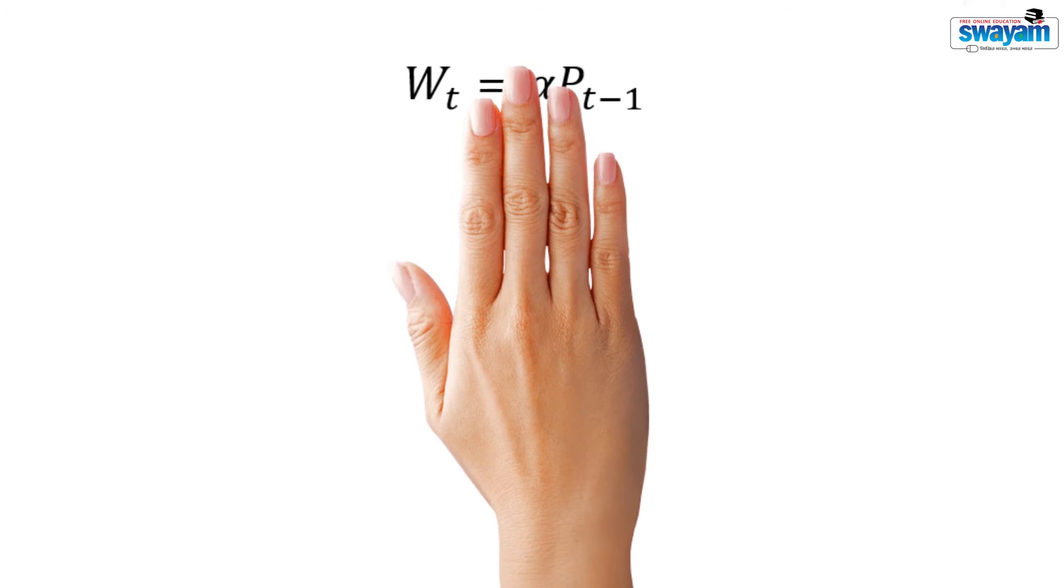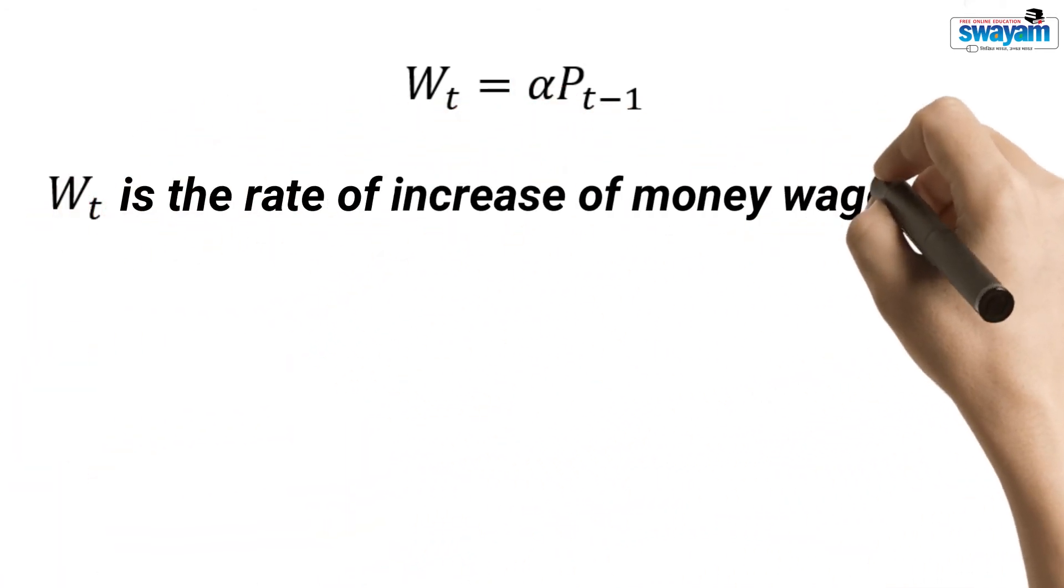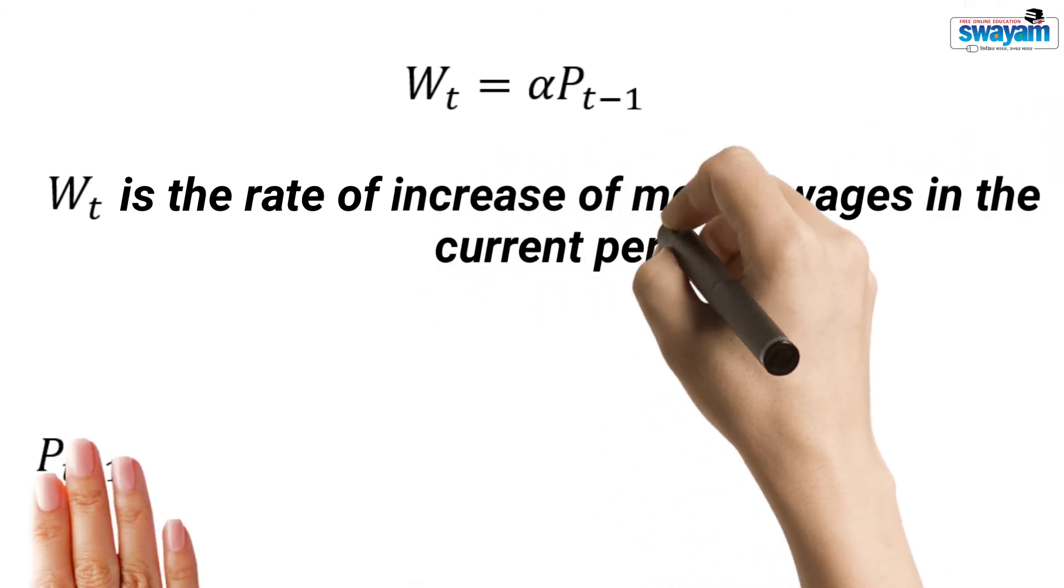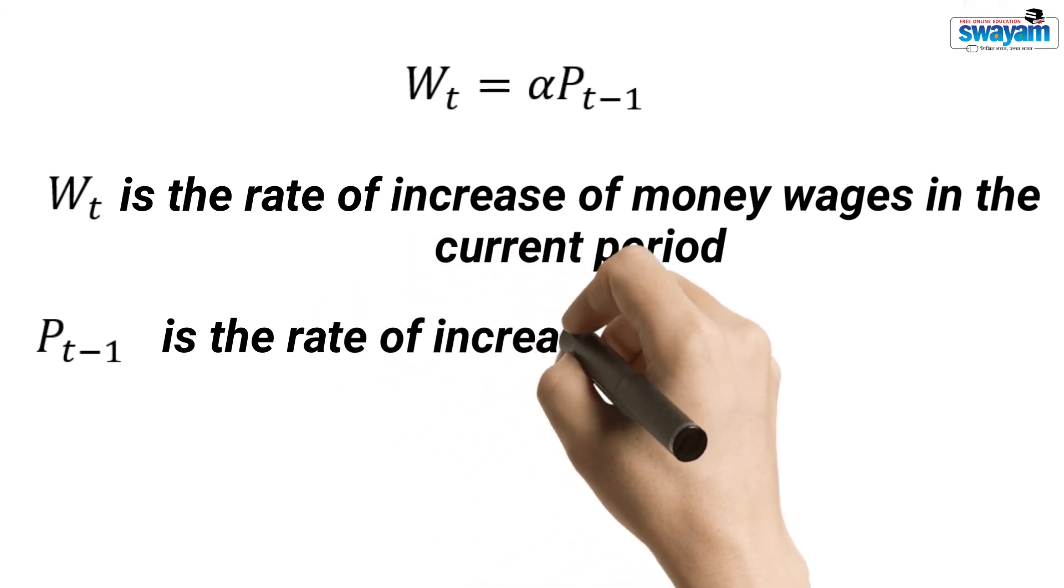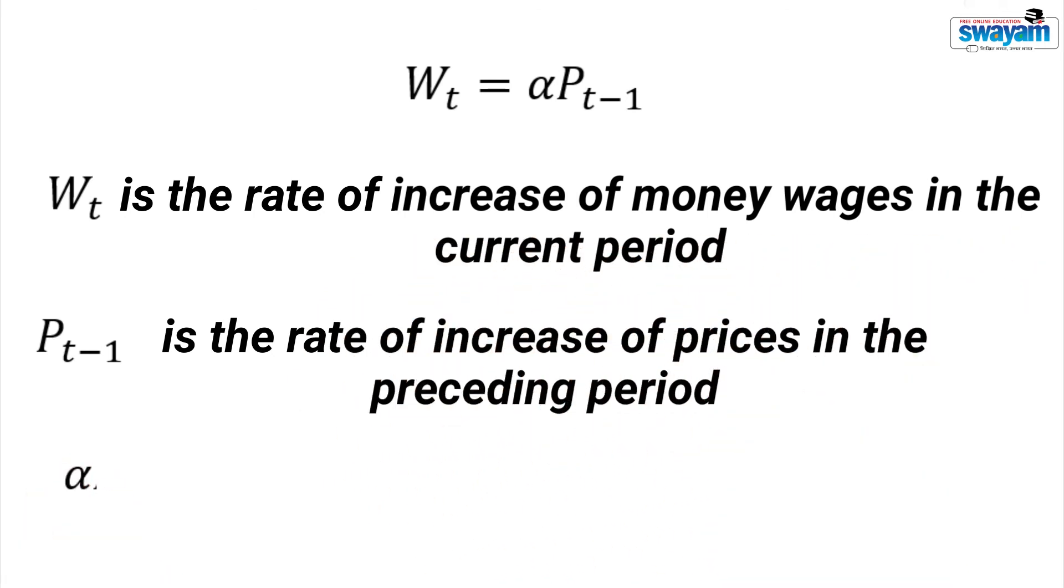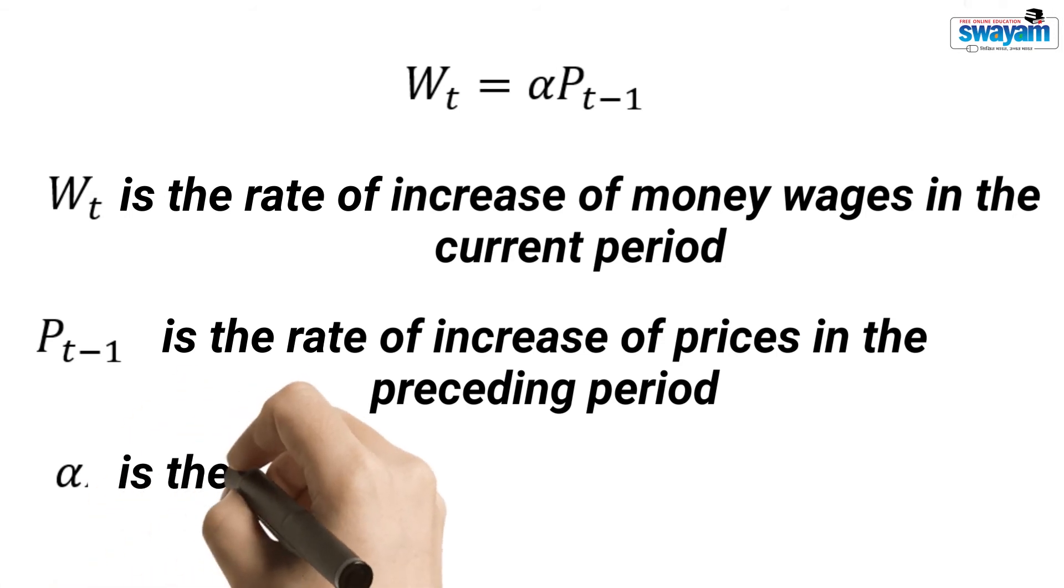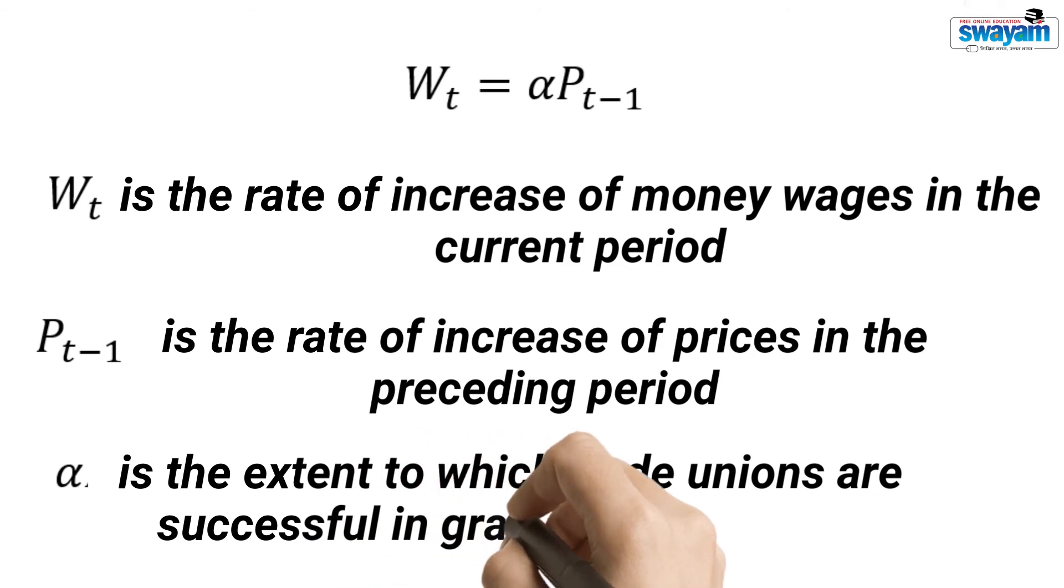We can write like this. Wt is the rate of increase of money wages in the current period. Pt minus 1 is the rate of increase of prices in the preceding period and alpha is the extent to which trade unions are successful in granting wage claim.